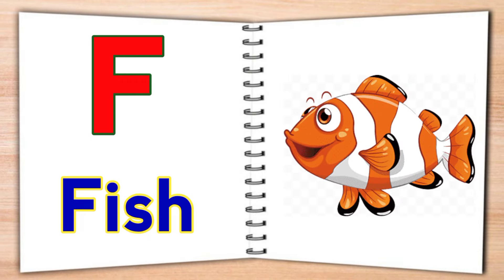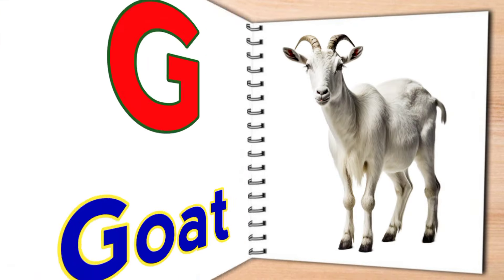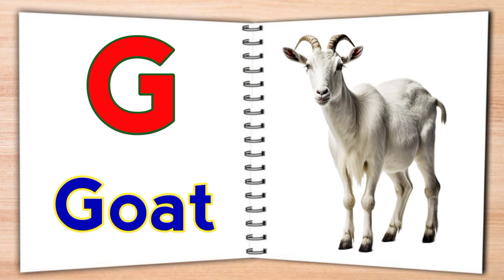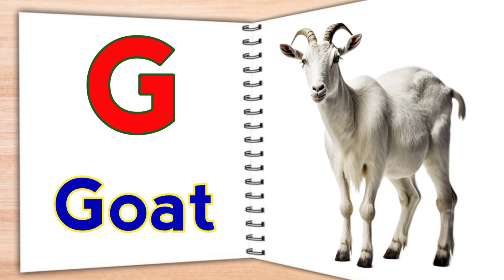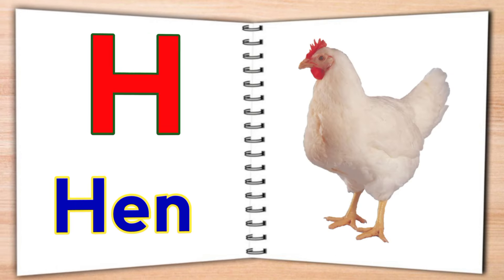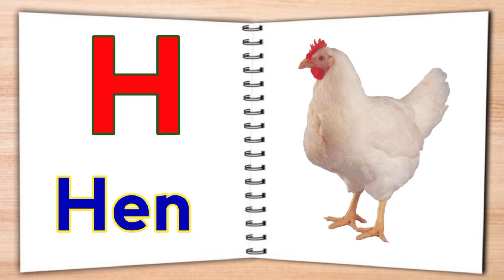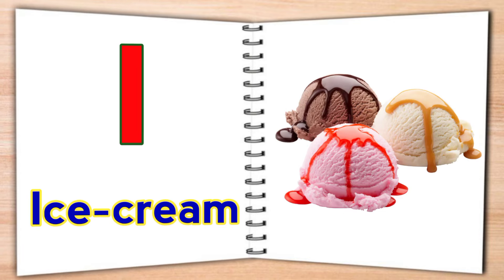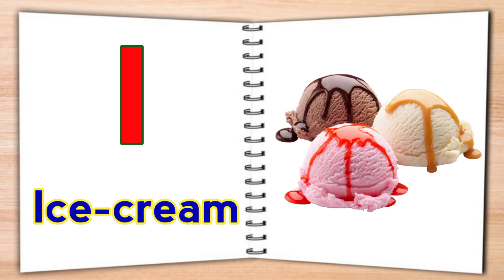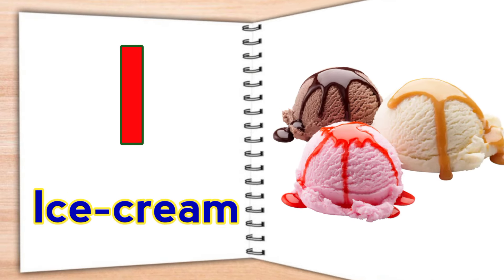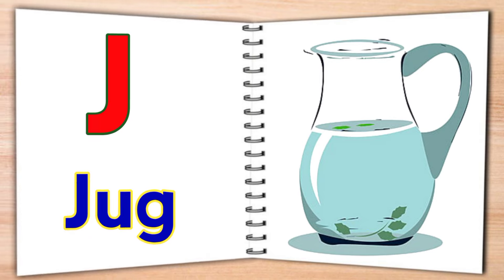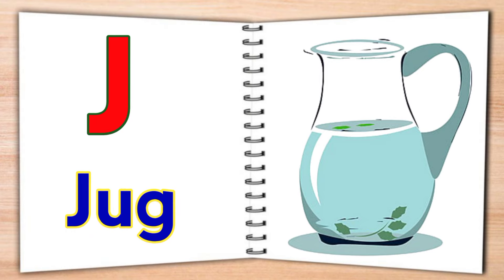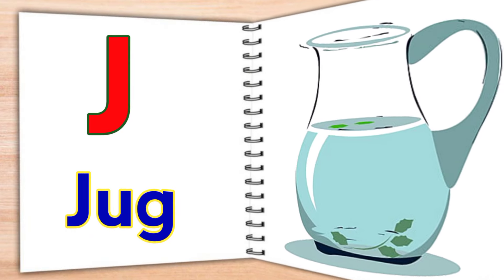F for fish, G for goat, H for hen, I for ice cream, J for jug.